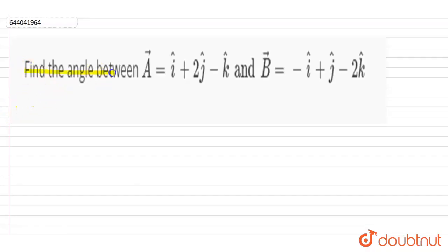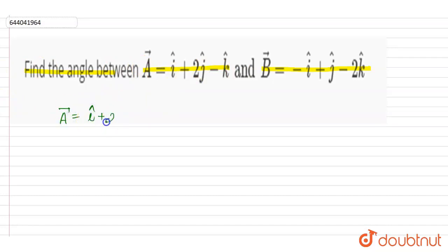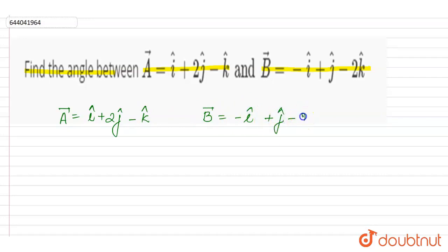Hi, in this question we have to find the angle between vector a, which is i cap plus 2j cap minus k cap, and vector b, which is equal to minus i cap plus j cap minus 2k cap.